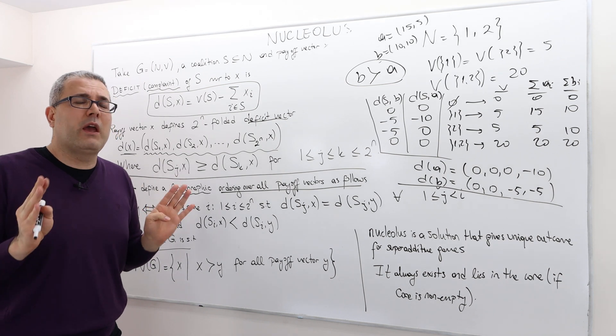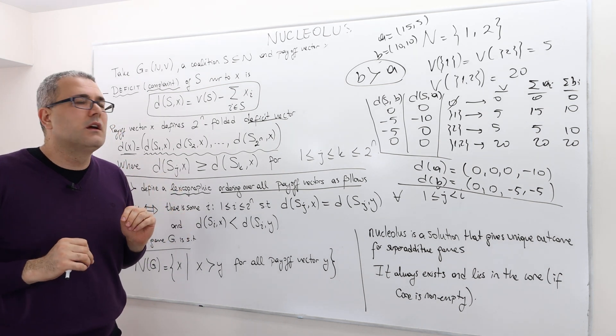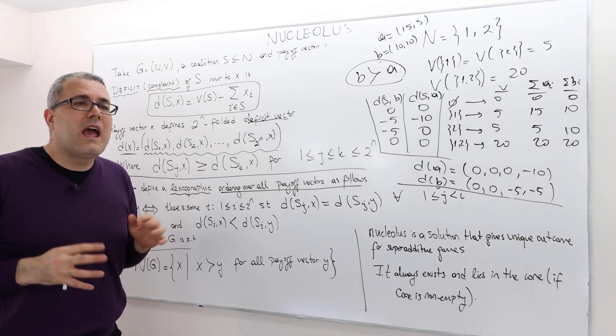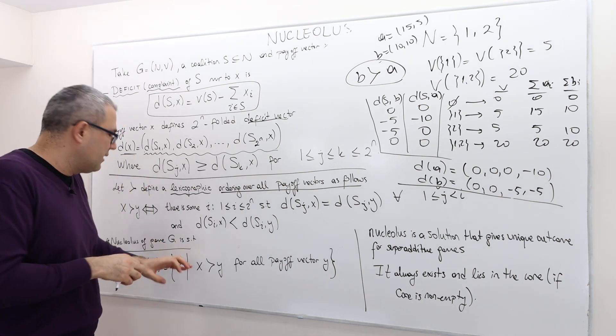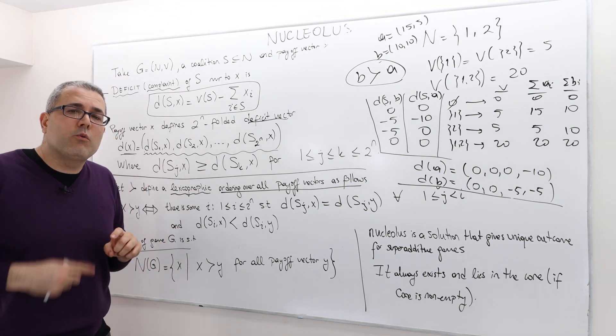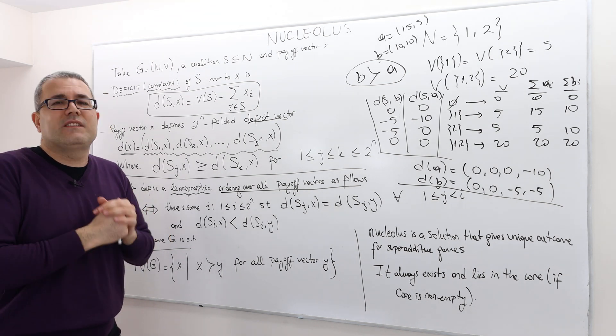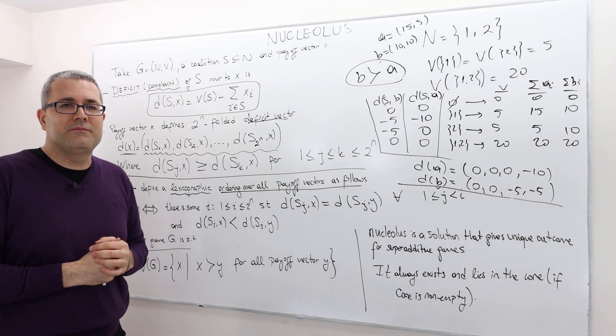And it always lies in the core, if the core is non-empty, obviously. If the core is non-empty, then nucleus is definitely in the core. The best idea would be characterize all the payoffs in the core for any given game. Calculate all the payoffs in the core. Some games, it's unique. Some games, maybe many. And then out of all these, calculate the nucleus. That would probably make the calculations easier. But that's the idea of nucleus as a solution concept. I hope that was clear. Thank you.